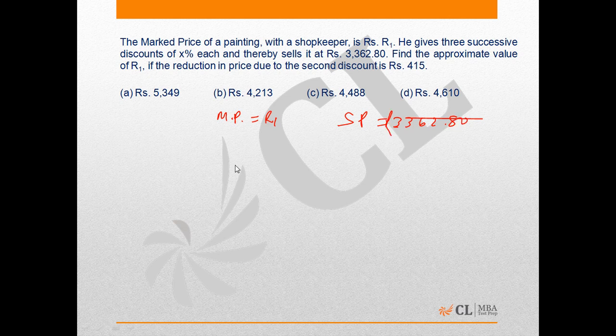Find the approximate value of R1. So we have to find the value of R1 if the reduction in price due to the second discount is Rs 415. Three discounts are given - suppose these discounts are D1, D2, and D3. Here the value of D2 is given as Rs 415, and the discount percentage is x percent.